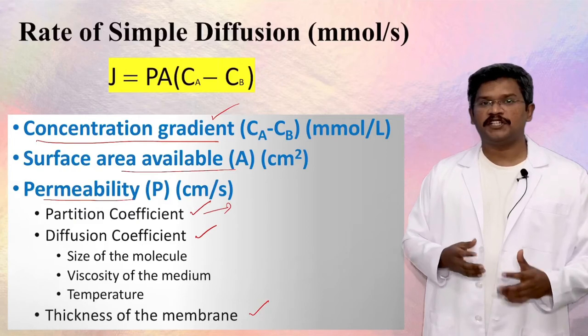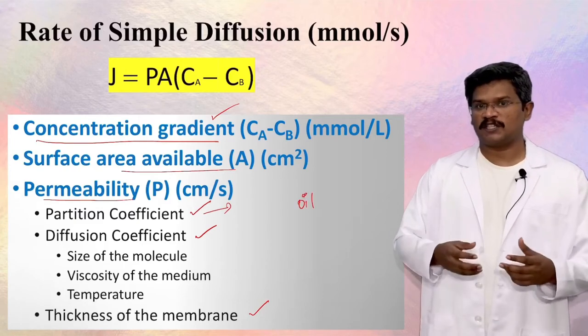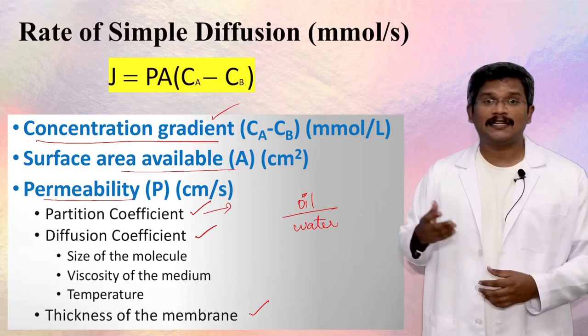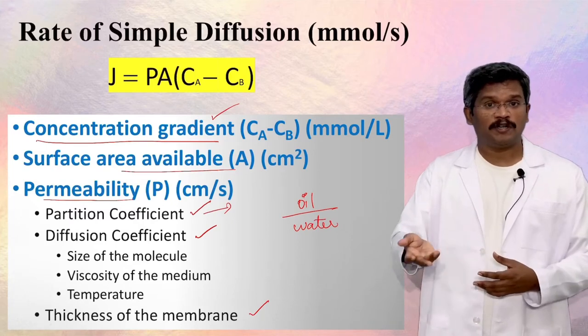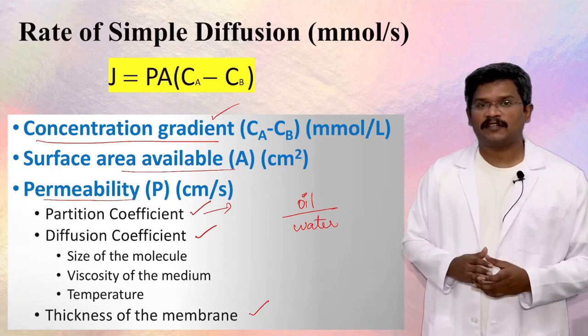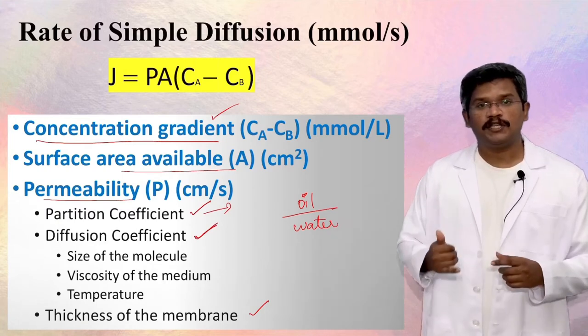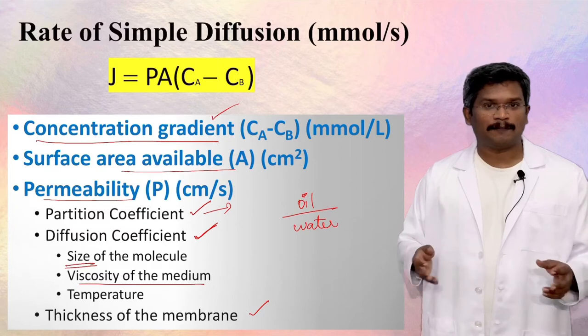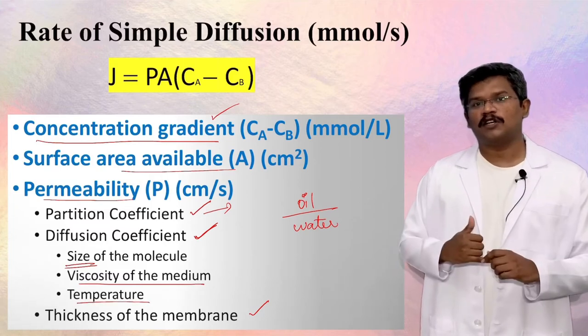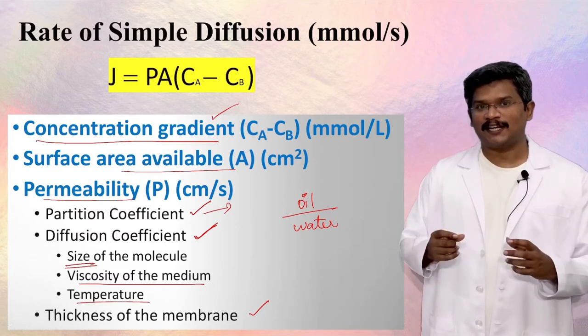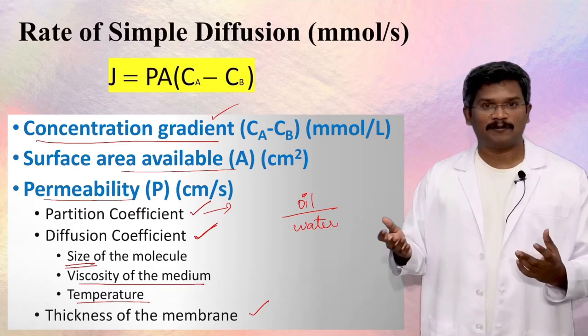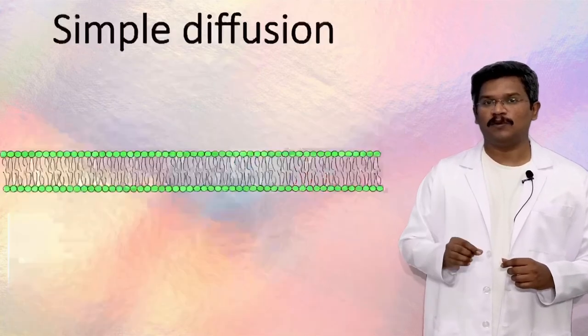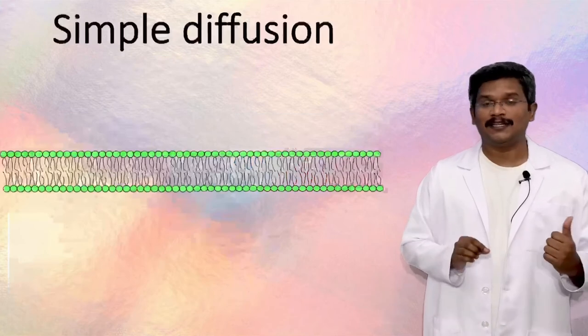Partition coefficient is the ratio of solubility of a substance in oil versus water. Higher lipid solubility means higher partition coefficient and higher permeability. The second factor is the diffusion coefficient, which depends upon the size of the solute, the viscosity of the medium, and the temperature. Smaller molecular size, less viscous medium, and higher temperature favor higher permeability. In summary, a small molecule with higher lipid solubility has the highest permeability in the lipid bilayer.